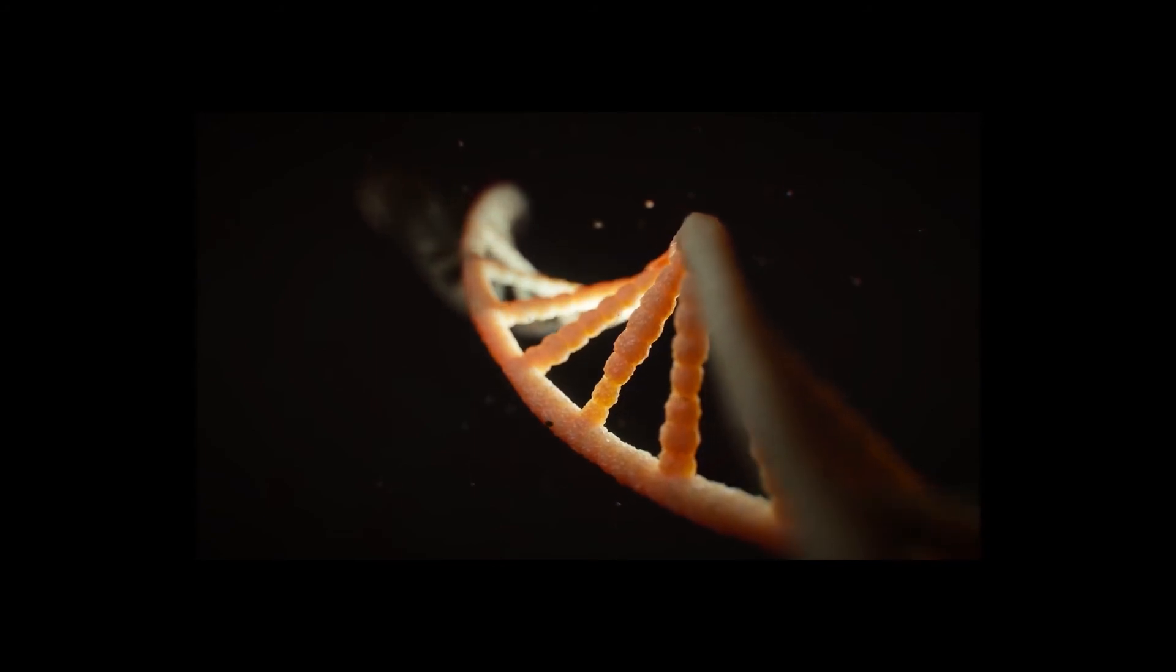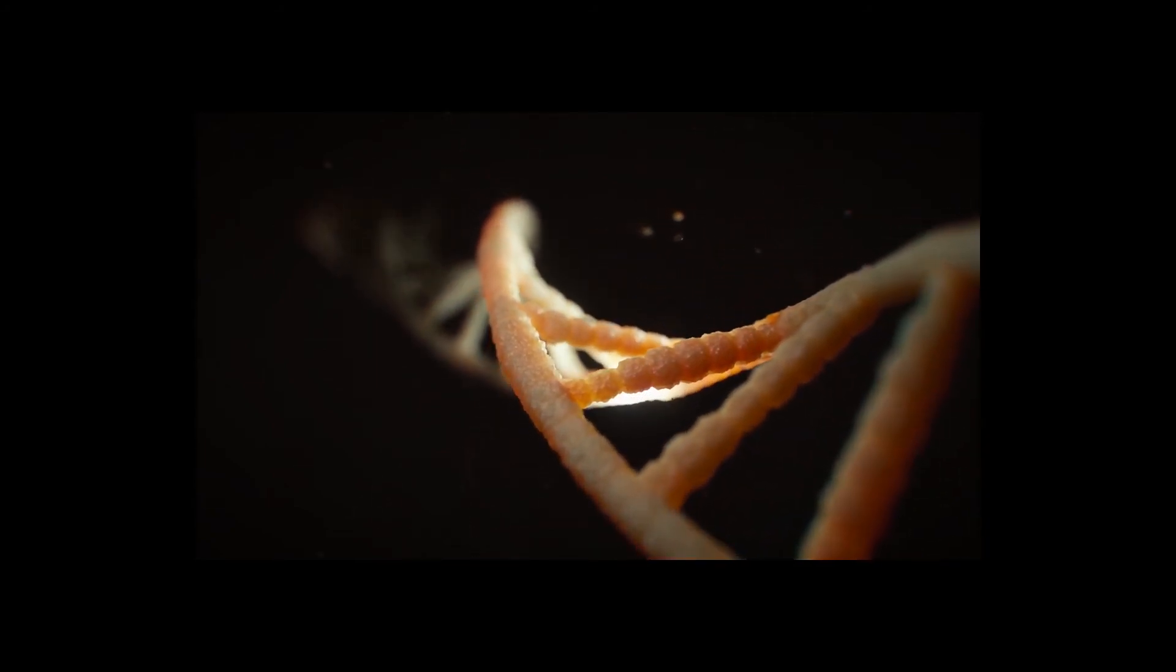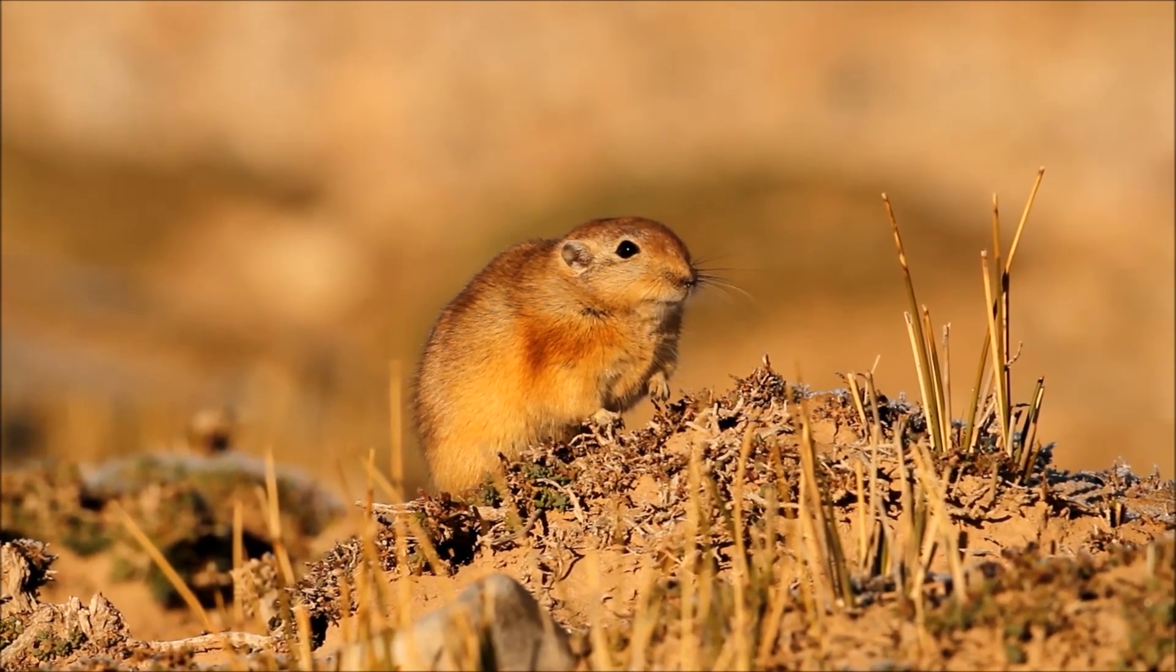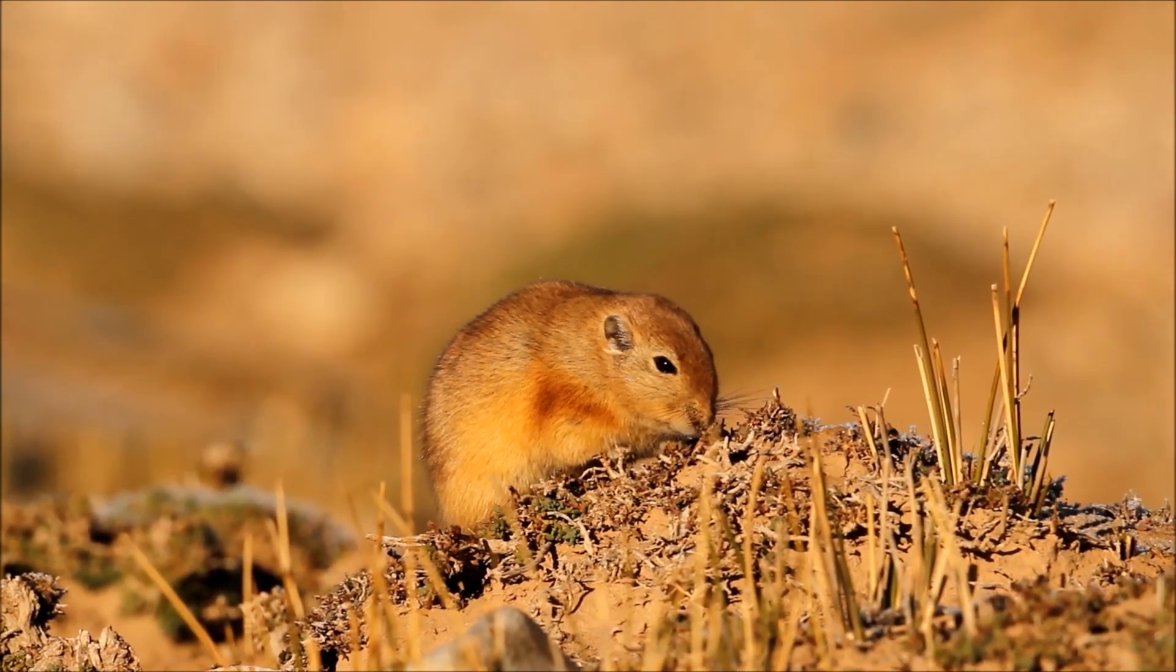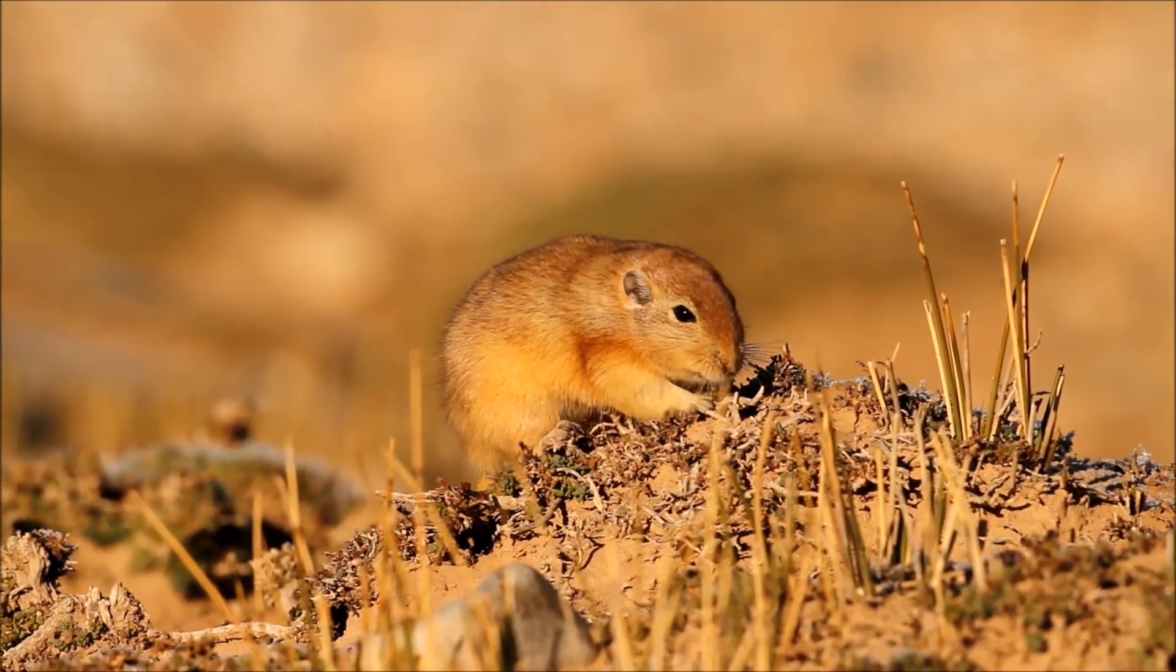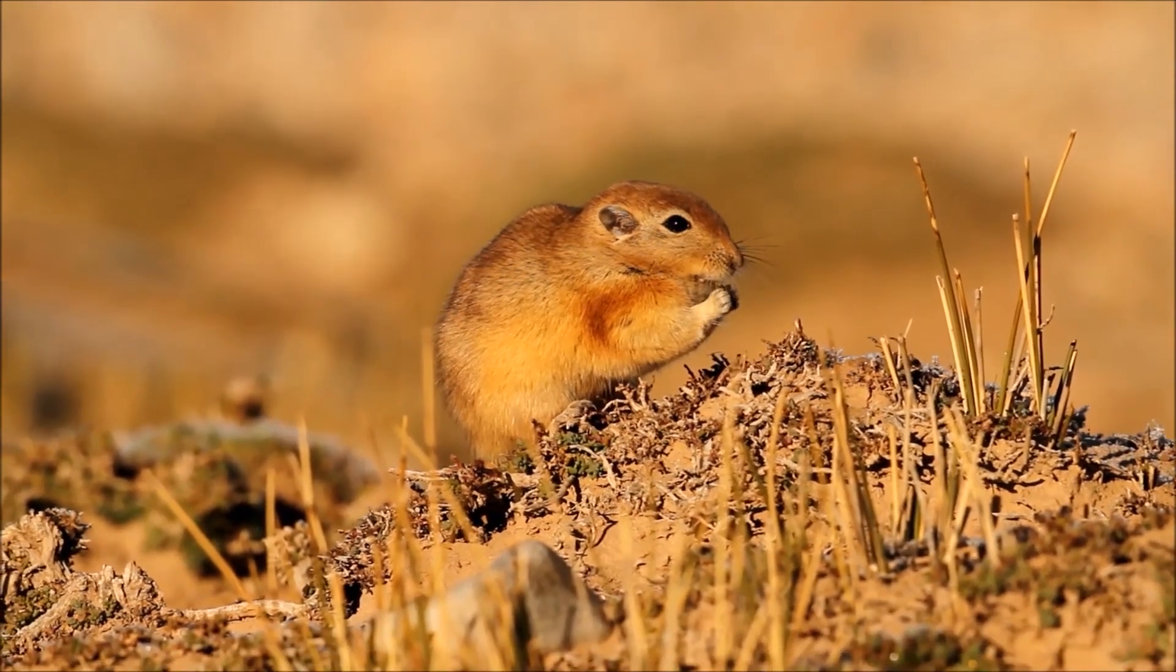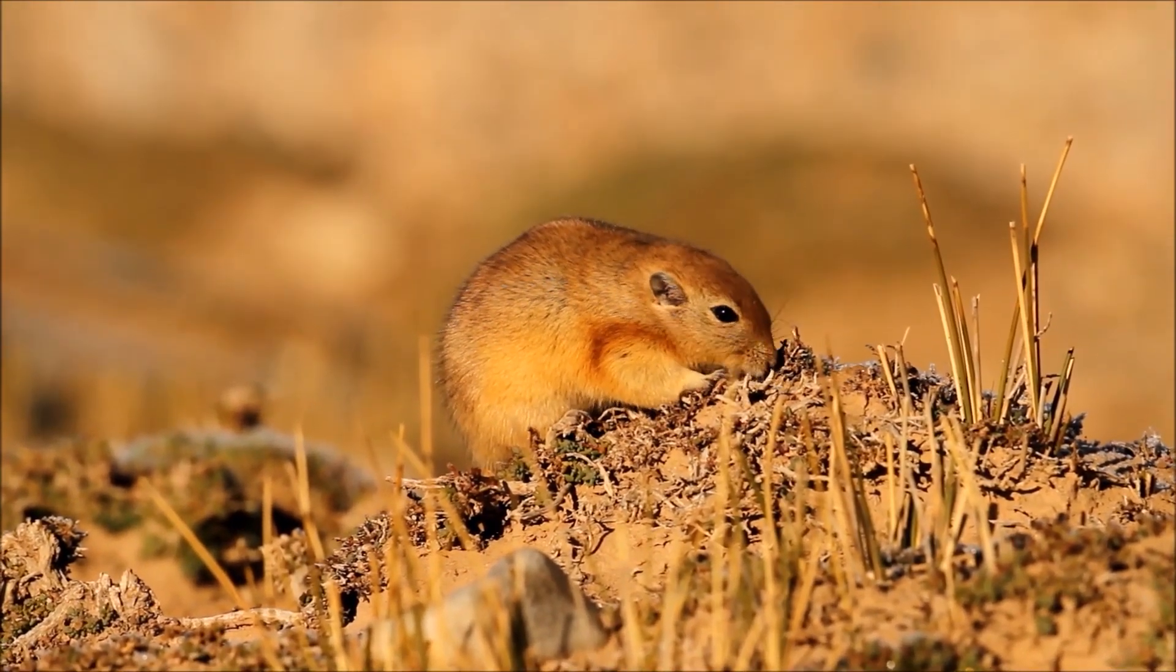For example, if sand rats eat nutritionally rich food, then they will develop diabetes and die. That could mean they are constrained to living in deserts. So dark DNA could be both their liberator and their jailer.